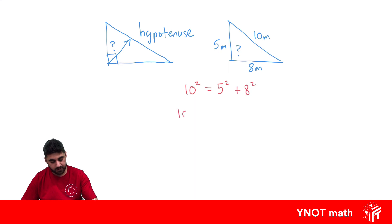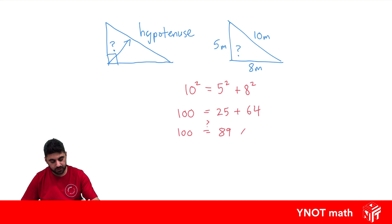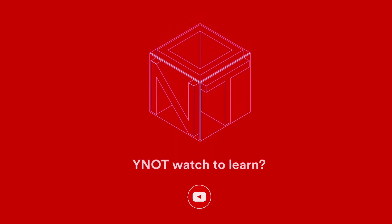10 squared is 100. 5 squared is 25. And 8 squared is 64. Remember, squared means the number times itself. Does 100 equal 25 plus 64? Well, that's 89, and that's not true. So the triangle is not right-angled, because Pythagoras' theorem does not hold true. So the triangle is not right-angled.